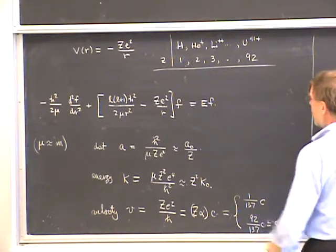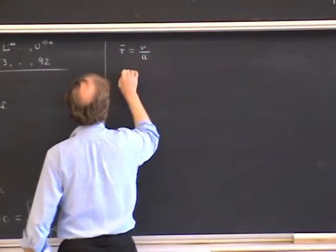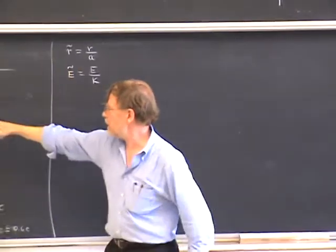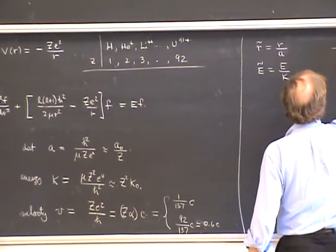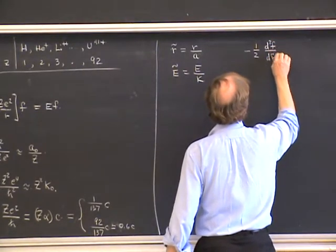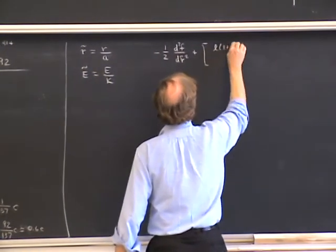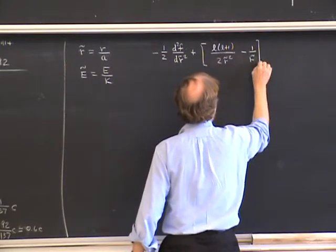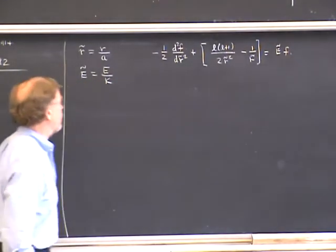Making a change of variables: let r-tilde equal r divided by a and E-tilde equal the energy divided by K, then substituting in gets rid of the physical constants. We end up with: minus one-half d squared f over dr-tilde squared, plus L times L plus 1 divided by twice r-tilde squared, minus 1 over r-tilde for the potential, equals E-tilde times f.